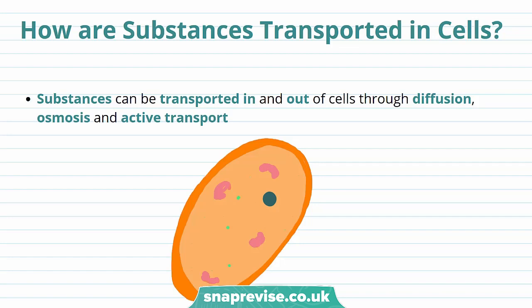Substances need to be transported across cell membranes. This is because cells need to take in useful stuff and also get rid of waste products. These substances can be transported in and out of cells through diffusion, osmosis, and active transport. What determines whether the substance moves through diffusion, osmosis, or active transport depends on what the substance is.